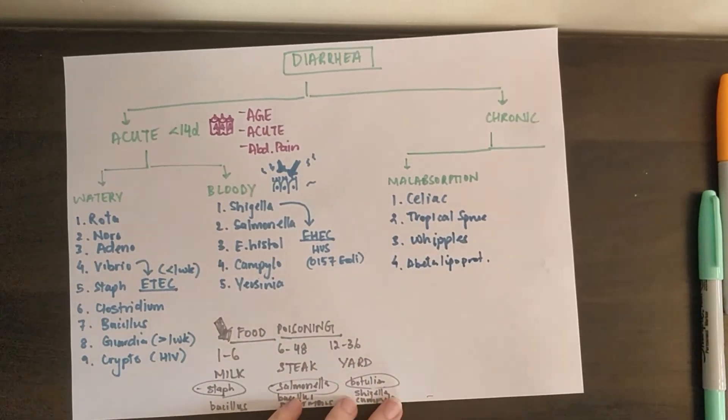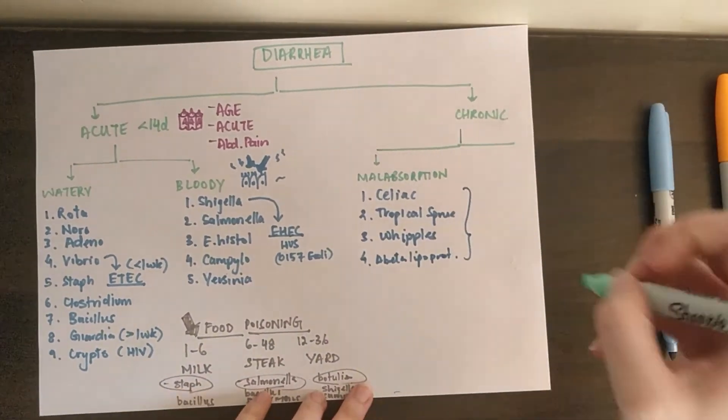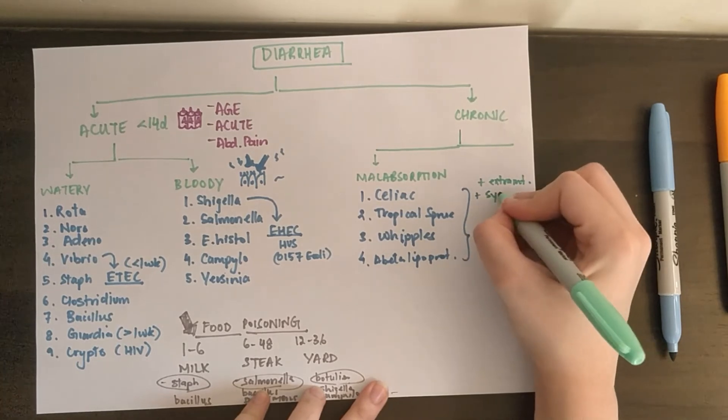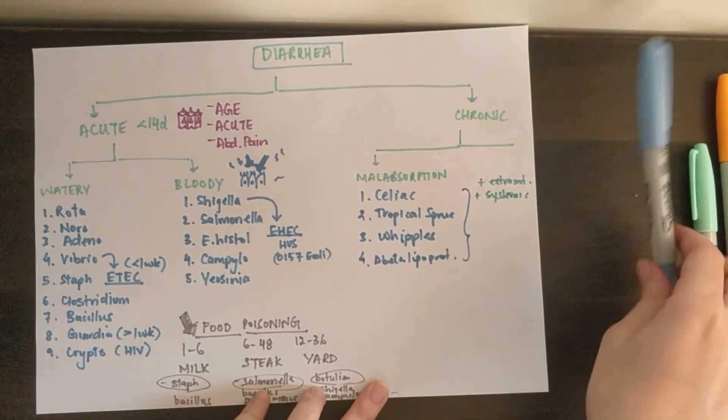Now, if you have all of these, but the question also mentions extra intestinal symptoms, or systemic features, and bloody diarrhea, think IBD, inflammatory bowel disease, so ulcerative colitis and Crohn's.